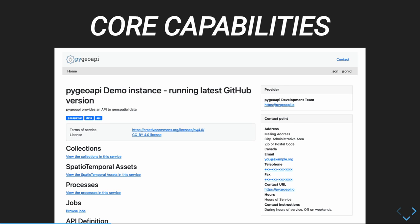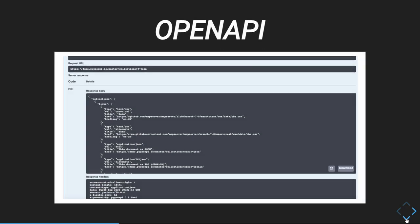Let's move into our core capabilities. PyGeo API supports a number of OGC specifications. This is the landing page of the server, represented in HTML, but at the top right you can see different links to jump into the JSON and JSON-LD representations. We also support OpenAPI, so you can reach what was formerly known as the Swagger page on a route, and through this OpenAPI document interact with a client and consume all the capabilities that PyGeo API supports.